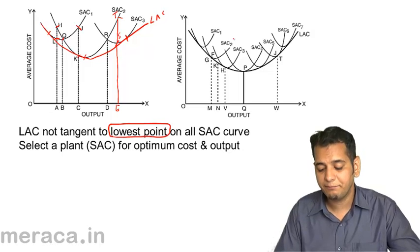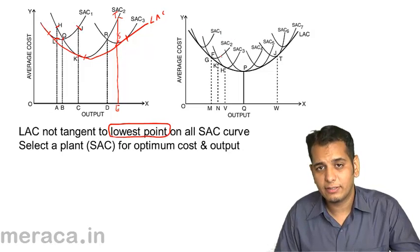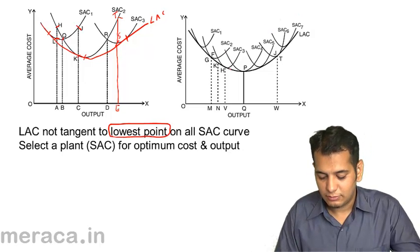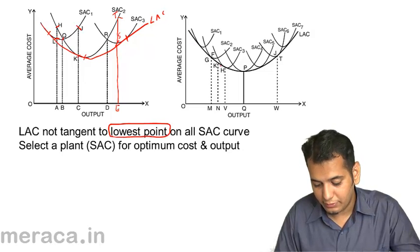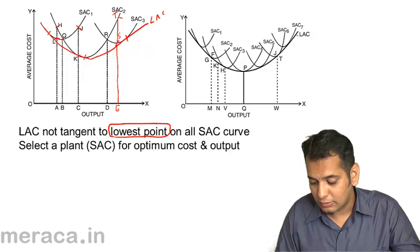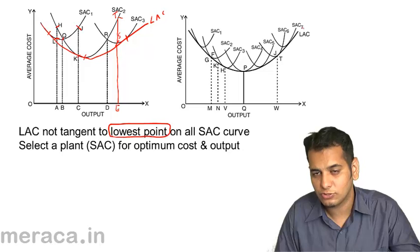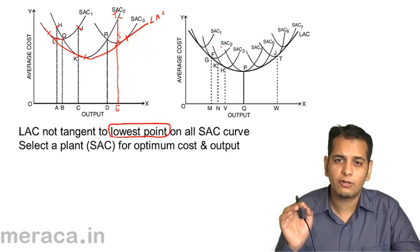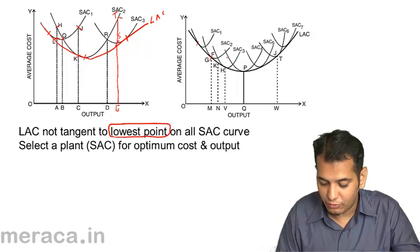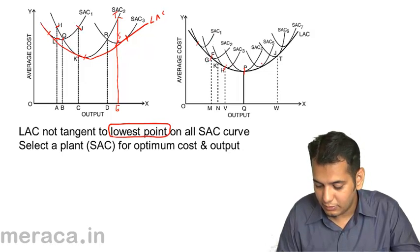In the second diagram, there are seven short run average cost curves — SAC1 through SAC7. All these short runs are joined at a point on each curve and a curve is drawn through all of them. This curve is called the long run average cost curve, or LAC, and it is tangent to all the short run average cost curves at those points. However, these tangency points need not always be the lowest points on the respective SACs.